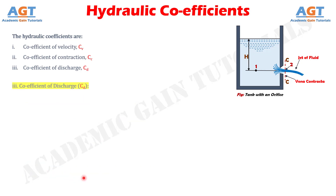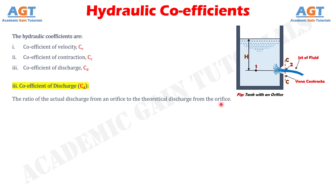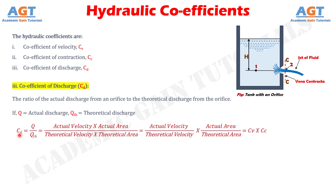And finally, the third hydraulic coefficient is the coefficient of discharge. It is defined as the ratio of the actual discharge from an orifice to the theoretical discharge from the orifice. It is denoted by CD. If Q is actual discharge and QTH is the theoretical discharge, then mathematically the coefficient of discharge CD is given as CD equals to actual discharge Q divided by theoretical discharge QTH.